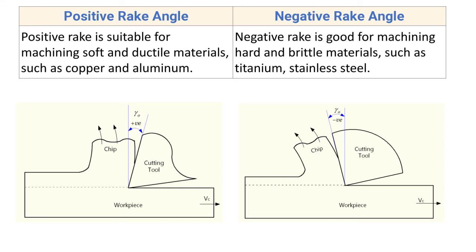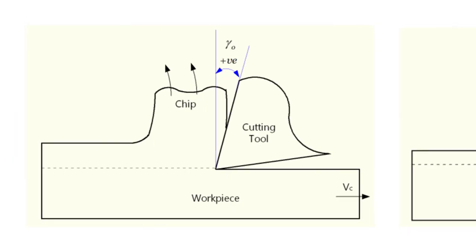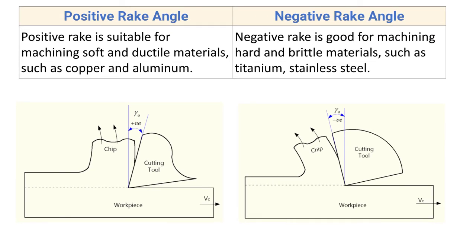The last difference: positive rake is suitable for machining soft and ductile materials such as copper and aluminium. With positive rake angle there is very little material at the tool tip, so it cannot withstand high forces and is not suitable for machining hard materials. Negative rake is good for machining hard and brittle materials such as titanium and stainless steel, where more forces are required that the stronger negative rake tool can handle.